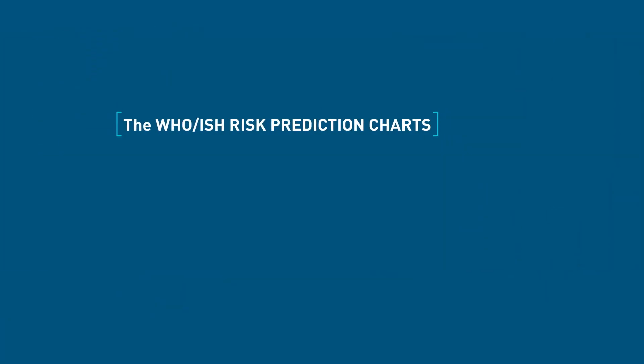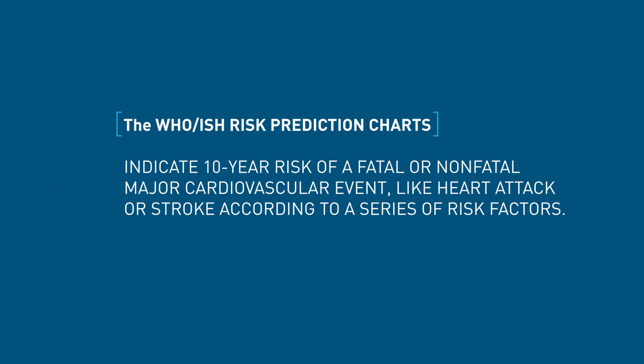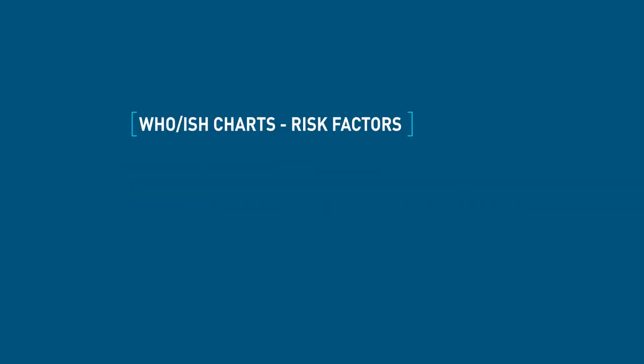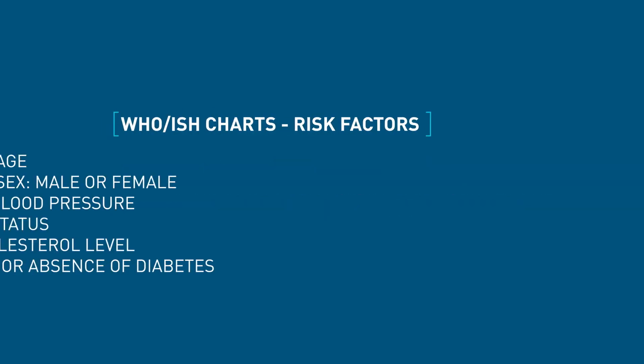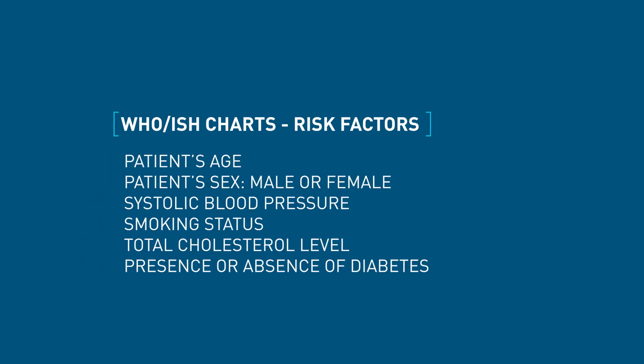The WHO ISH risk prediction charts indicate the 10-year risk of a fatal or non-fatal major cardiovascular event like a heart attack or stroke, according to a series of risk factors including the patient's age, sex, blood pressure, smoking status, total blood cholesterol, and presence or absence of diabetes mellitus.